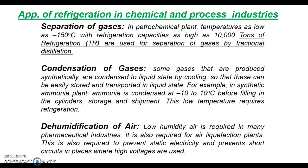Application of refrigeration in chemical and process industries: Separation of gases — in petrochemical plants, temperatures as low as minus 150 degree Celsius with refrigeration capacity as high as 10,000 tons of refrigeration are used for separation of gases by fractional distillation. Condensation of gases is another area in chemical industry where refrigeration is used. Ammonia plants are usually used with a temperature of condensation of around minus 10 to plus 10 degree Celsius. Dehumidification of air required for various applications is also produced using refrigeration processes.